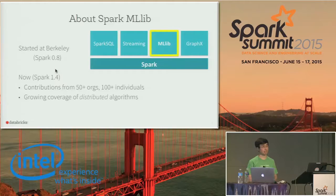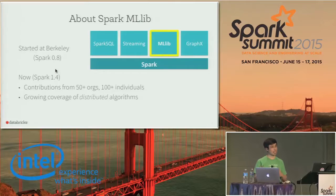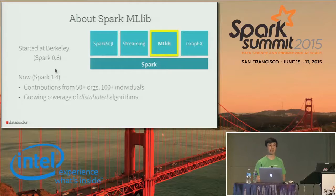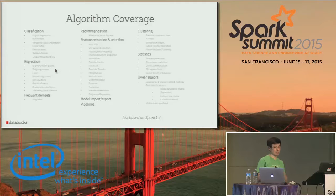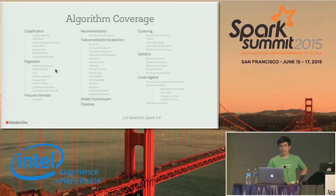Just a 30-second overview of MLlib. It's one of the four big libraries built on top of Spark, starting at Berkeley as a research project entering Spark at 0.8, and several releases later, contributions from a lot of organizations, many individuals, and pretty good coverage of distributed algorithms. Here's a mostly complete list: big categories include classification, regression, recommendation, clustering, and a lot of feature extraction.